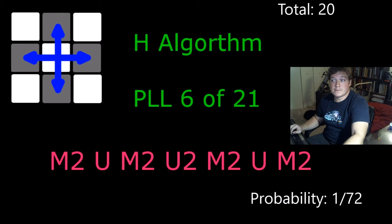The H algorithm, if you have to do the H algorithm, it's symmetric. So there's only one way this can happen. 20 total cases, probability one in 72.